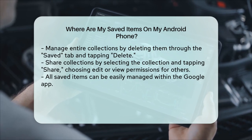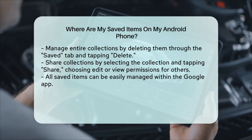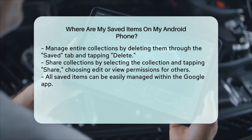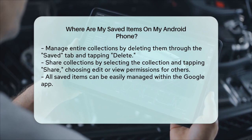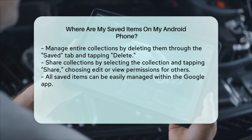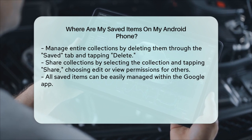You can choose to let others edit, or just view your collection by selecting the appropriate link. To recap, all your saved items on your Android phone are accessible through the Google app Saved tab. Here, you can view, organize, edit, and even share your saved items with ease.